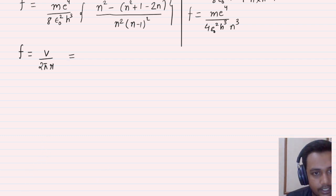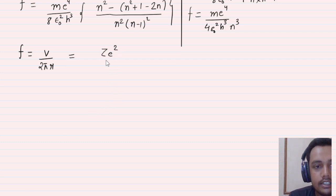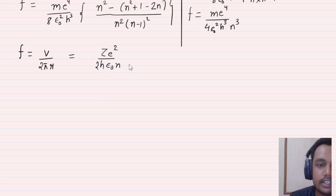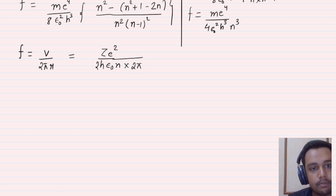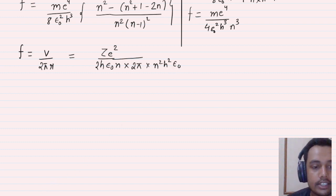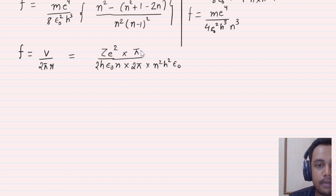For this, you need to know the velocity formula: v = Ze² / (2ε₀nh). You also need the radius formula: r = n²h²ε₀ / (πmZe²). Since this is hydrogen, Z = 1. Now substituting, I will bring the denominator term up: f = v/(2πr) = [Ze²/(2ε₀nh)] × [πmZe²/(n²h²ε₀)].